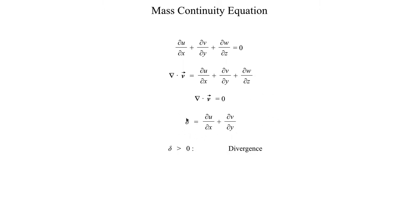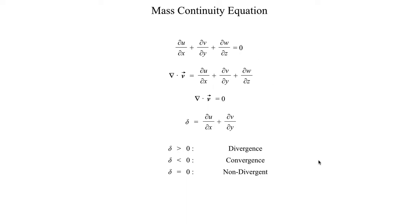By convention, if delta is positive — if we evaluate all these derivatives and end up with a positive result — that means we have a divergent flow pattern, meaning the flow is moving away from a common point. If delta is less than zero, that means we have convergence, with all the flow moving towards some common point. It's also entirely possible for this term to be zero, giving us a non-divergent flow pattern, in which case dw/dz would also have to be zero. Del dot v also follows the same convention, but takes into account x, y, and z directions, whereas delta only considers the horizontal x and y plane.